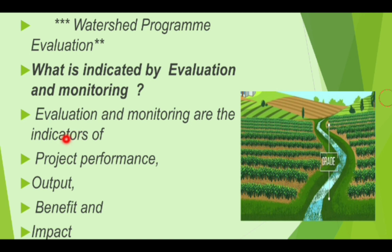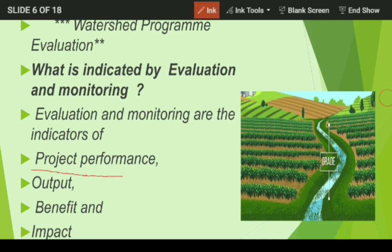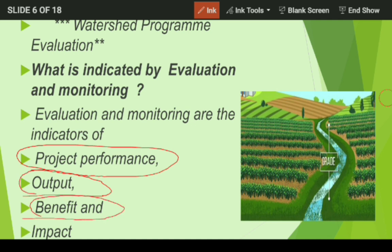What is indicated by evaluation and monitoring? Evaluation and monitoring are indicators of: number one, project performance; number two, output; number three, benefit; and number four, impact. Evaluation and monitoring suggest how the project is performing — whether it is on track, going very good, or very bad — and that can be understood through evaluation and monitoring.